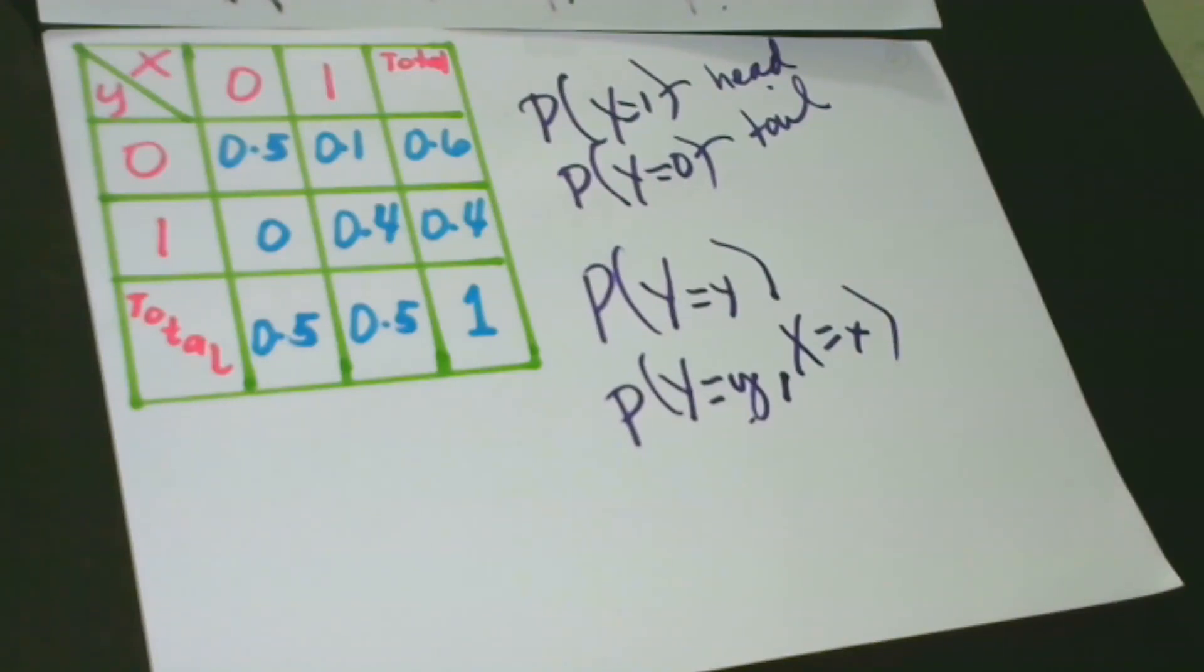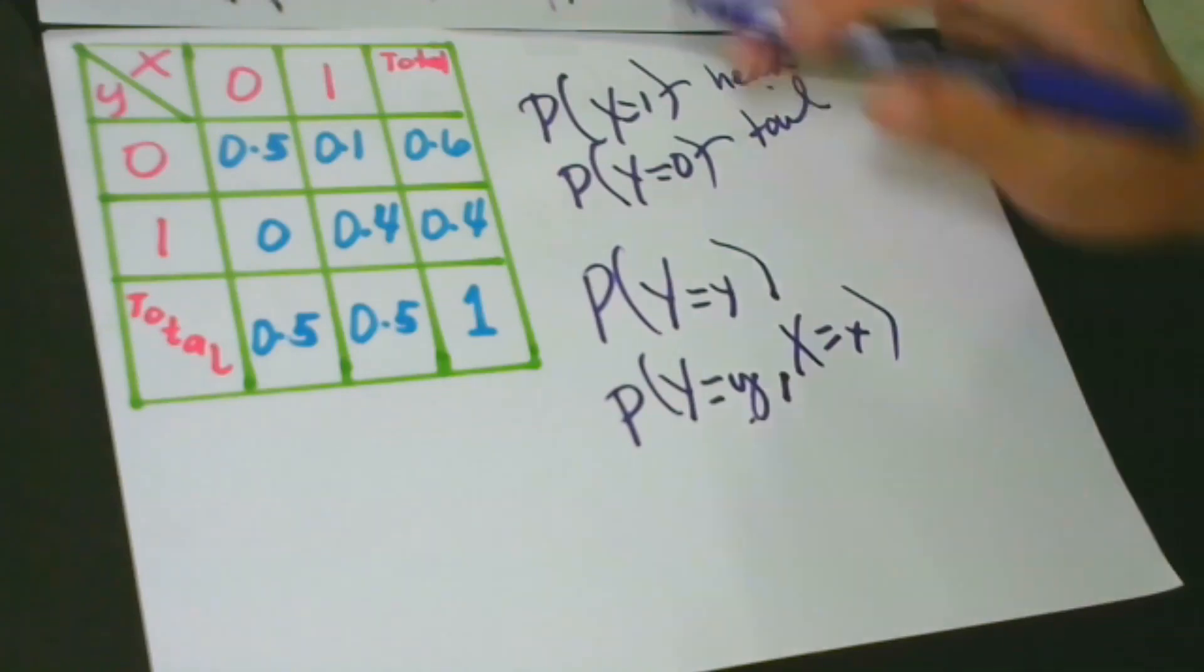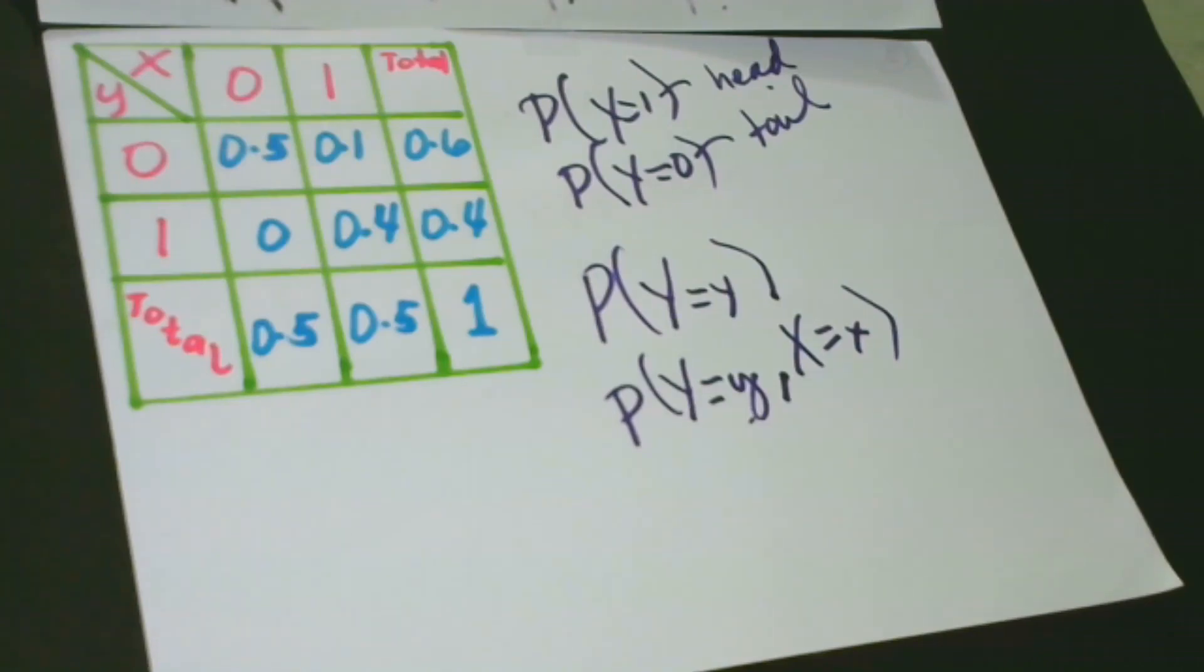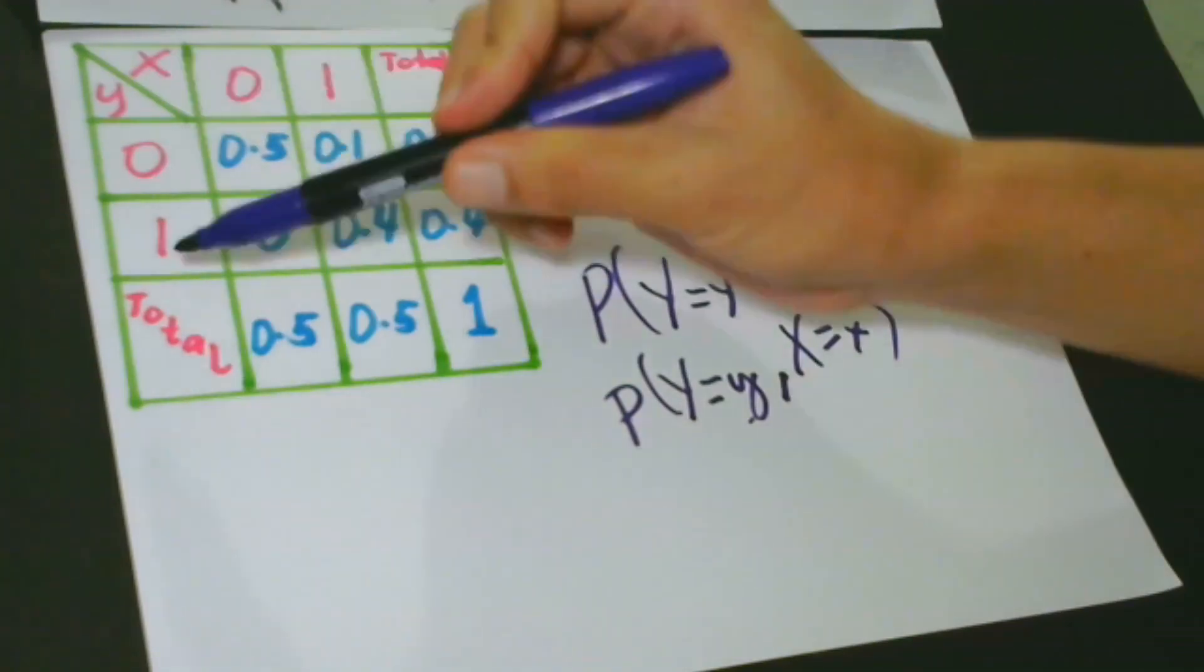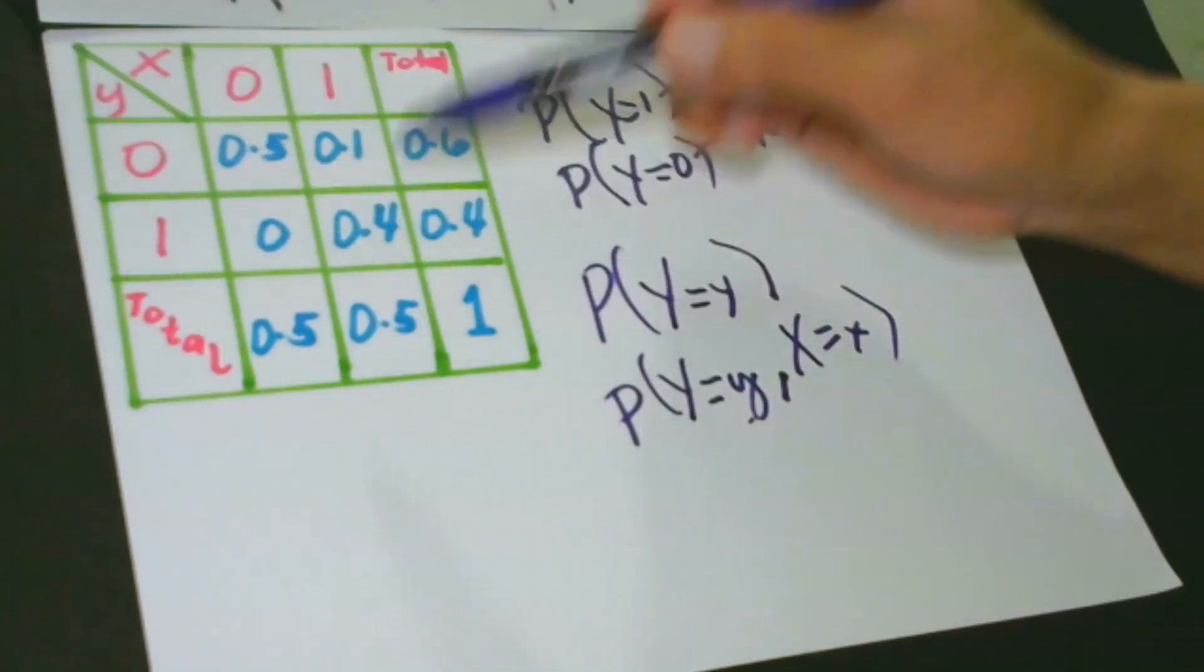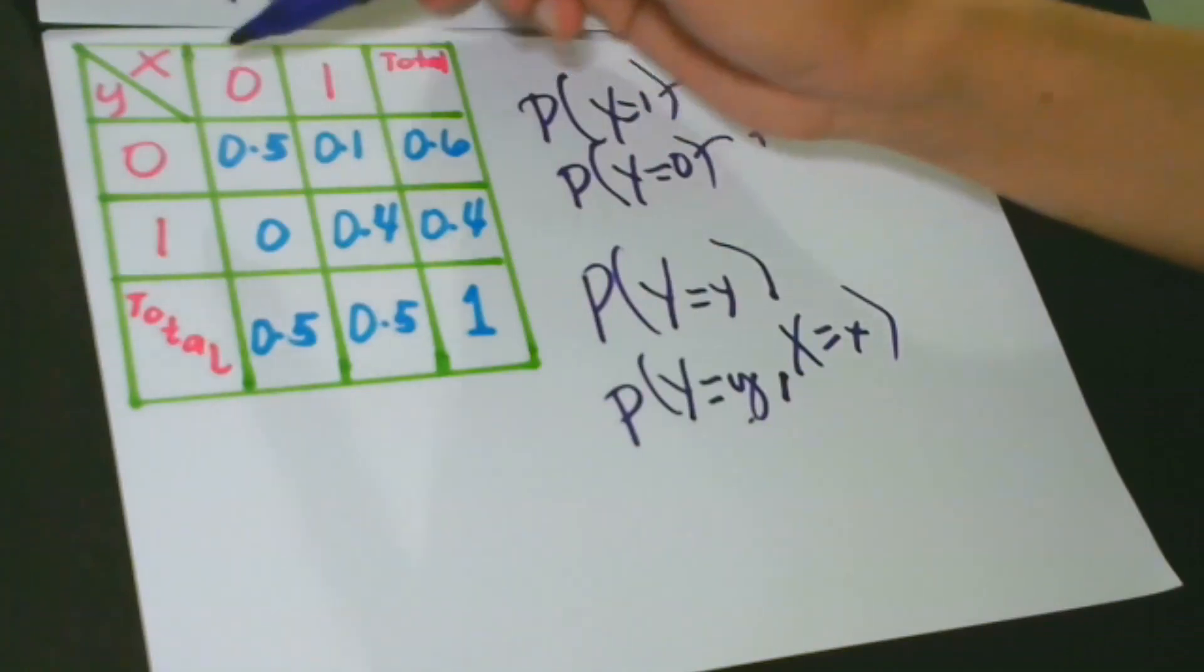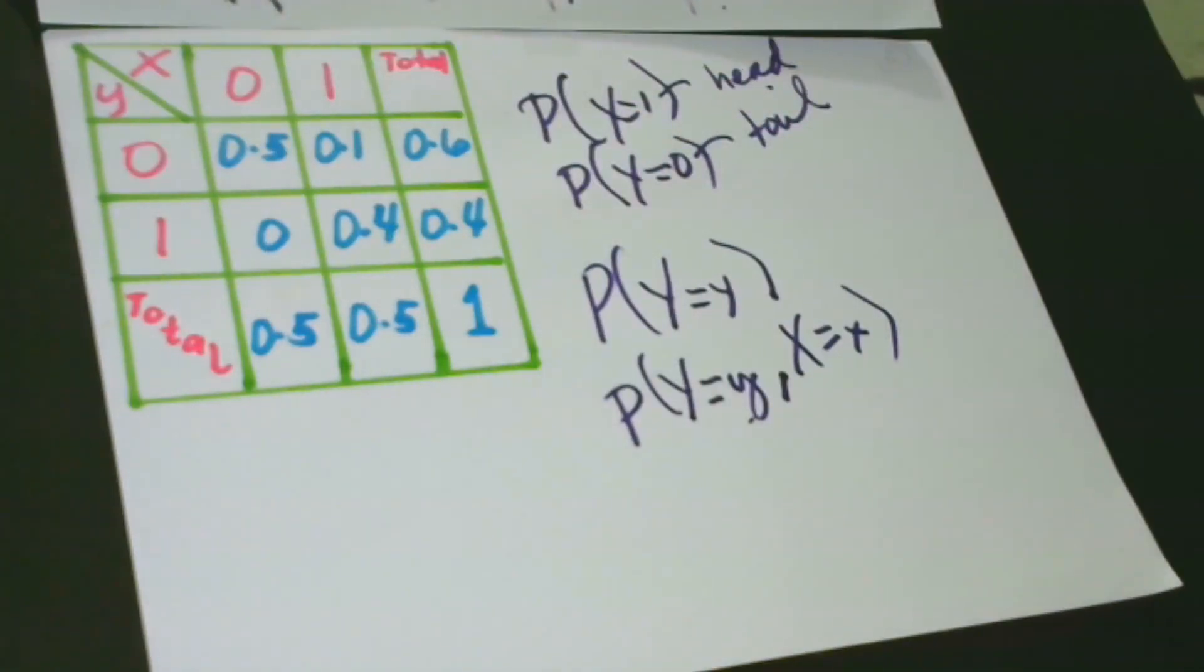This can be done by summing the joint probabilities over all possible values of X. What I mean here is that to get the values of Y, we are going to sum up the joint probabilities of the possible values of X.